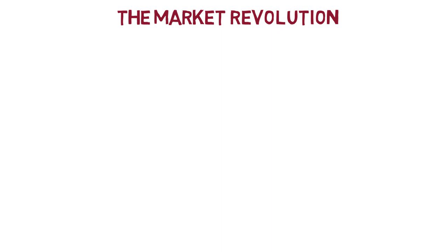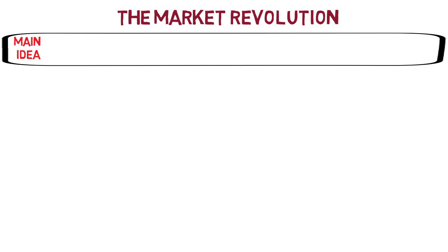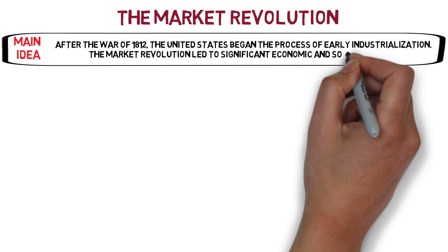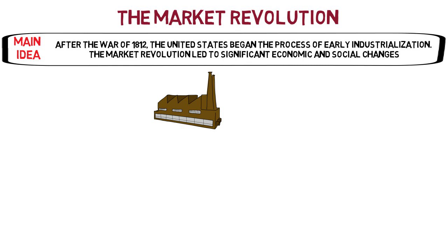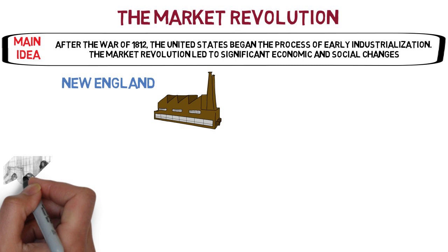The Industrial Revolution, which began in Europe during the late 18th century, revolutionized how people lived and worked. After the War of 1812, the United States began its own process of industrialization called the Market Revolution. The Market Revolution in the United States led to significant economic and social changes while contributing to a growing sense of sectionalism in antebellum, or pre-Civil War, America.